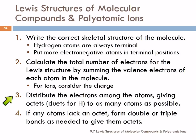Then you're going to distribute those electrons among the atoms, giving octets or duets for hydrogen to as many atoms as possible. Sometimes you can give everybody an octet or a duet, and other times you run out of electrons. If you don't have enough electrons, then you need to form double or triple bonds by sharing some of the lone pairs. The goal is to give everybody an octet, except hydrogen gets two.